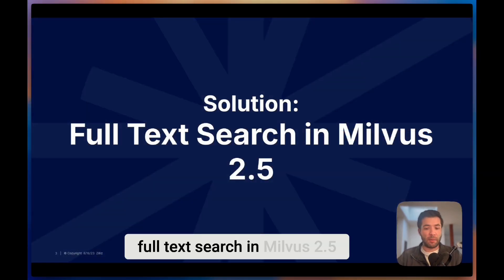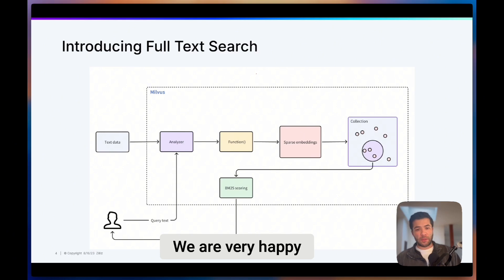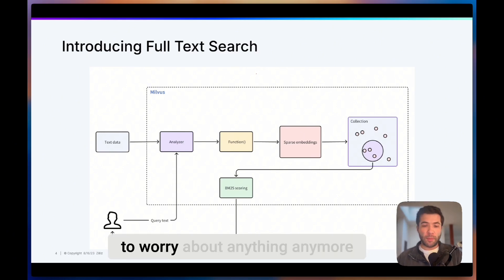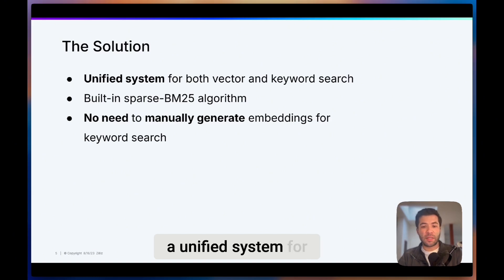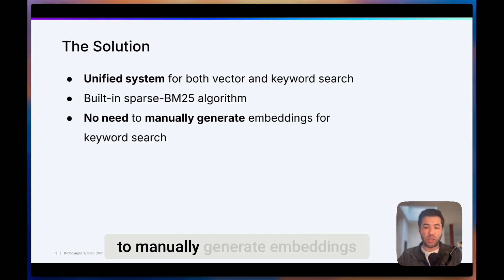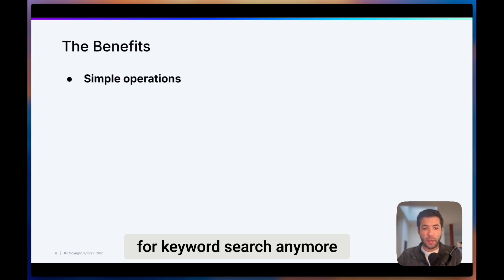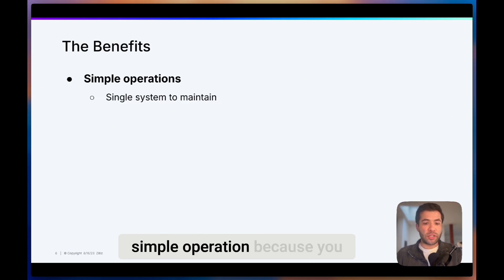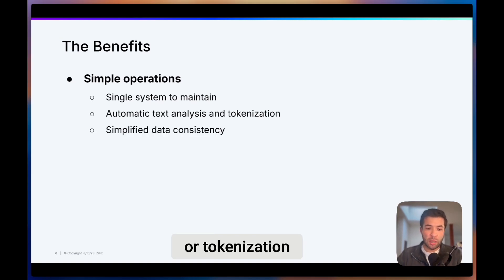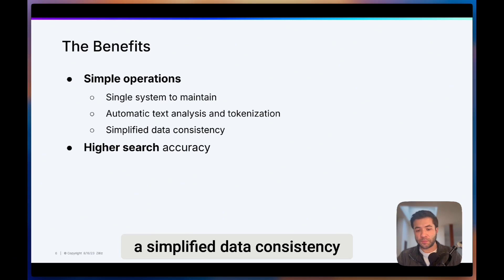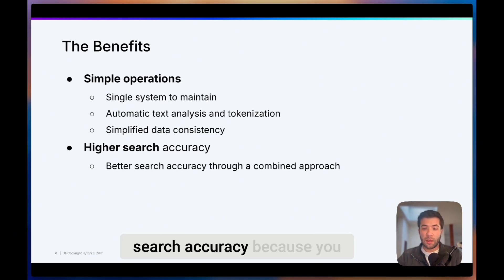The solution is Full Text Search in Milvus 2.5. You don't have to worry about anything anymore. You can just give us your text data, do queries directly using text, and we'll take care of the rest. You now have a unified system for both vector and keyword search. There's also a built-in sparse BM25 algorithm — no need to manually generate embeddings for keyword search anymore. The benefits include simple operation with a single system to maintain, no need to worry about text analysis or tokenization, simplified data consistency, and higher search accuracy through a combined approach for better search results.